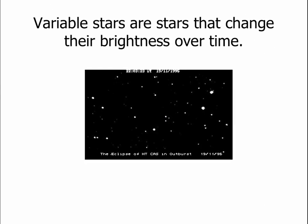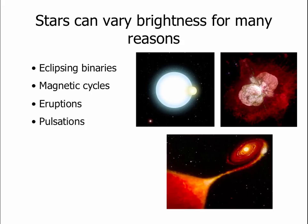There are many different reasons that you can have variable stars. One can be an eclipsing binary — we talked about these before, it's how we can learn masses of stars. Stars can have magnetic cycles like our Sun; our Sun has sunspots and that changes how bright the Sun appears. The Sun's magnetic cycle lasts 11 years, and other stars have these cycles too — some are shorter, some are longer. Stars can have eruptions; we talked about massive stars such as Eta Carina that can throw off huge amounts of material and change their brightness rather dramatically. Stars can also pull material off of companion stars — these are called cataclysmic variables. And finally, stars can pulsate: they can change their size, and as they pulsate they change their brightness as well.